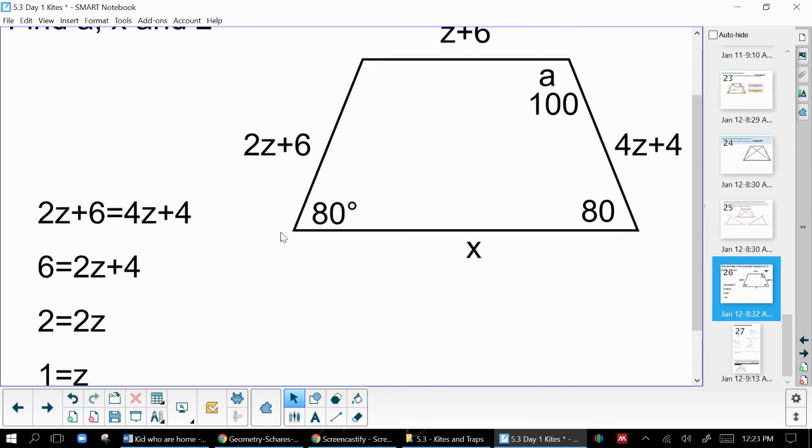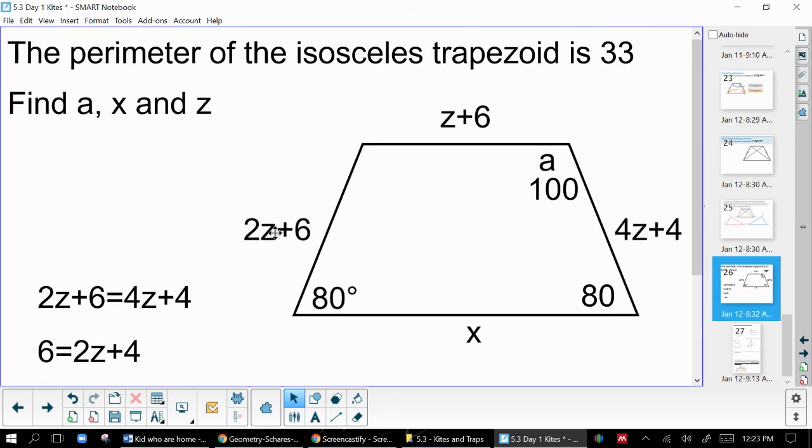Now, in order to find X, I'm going to need to use the perimeter, and I'm also going to need to know all of these sides. So if Z is 1, this side is 8, just by plugging in 1 for Z. This side is also 8. And then if Z is again 1, this side is 7.